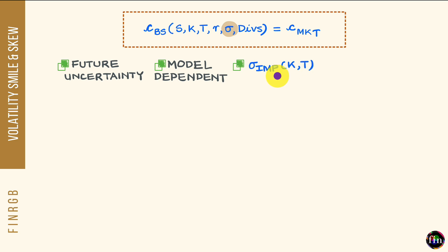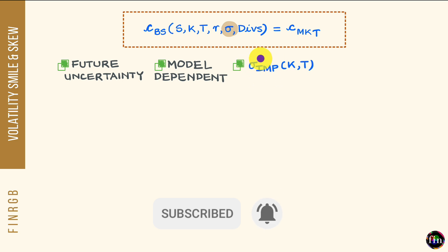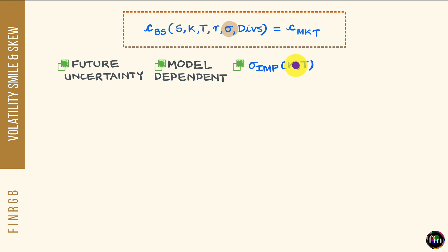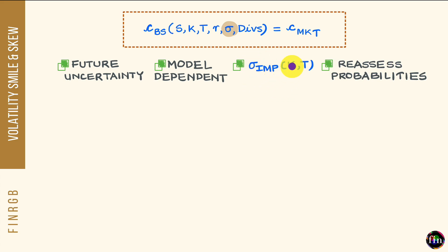We are now in a position to define what we mean by volatility smile. Think of volatility smile as this dependence of implied volatility on strike for a given or chosen time to expiry. The fourth aspect to keep in mind is that this dependence of sigma implied on K gives us information which can help us reassess the probabilities of huge up and down moves in our underlying asset.